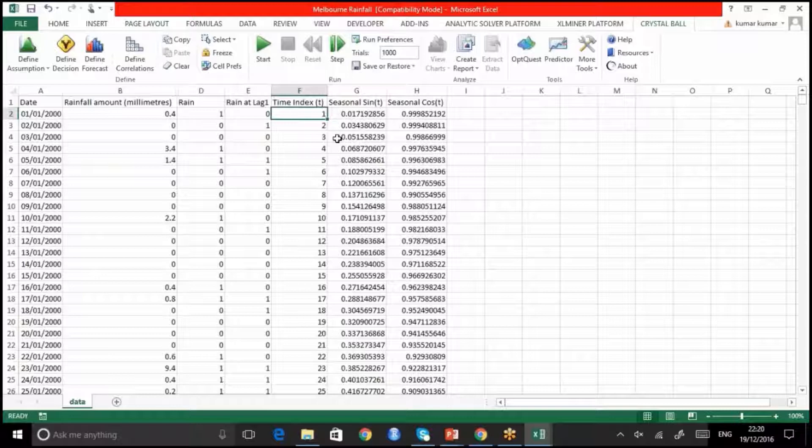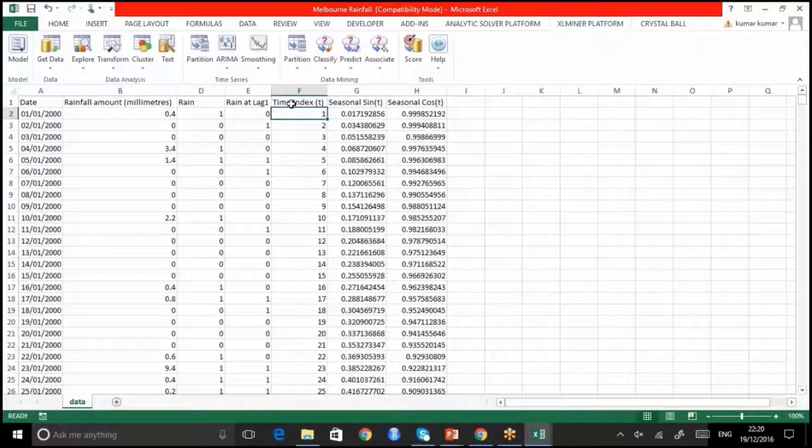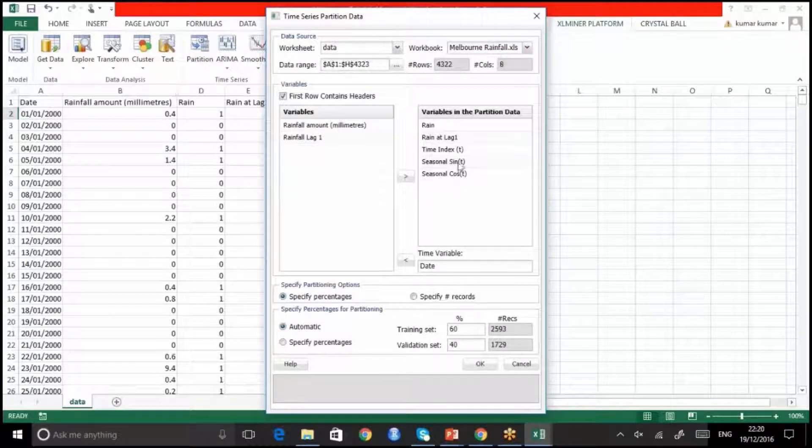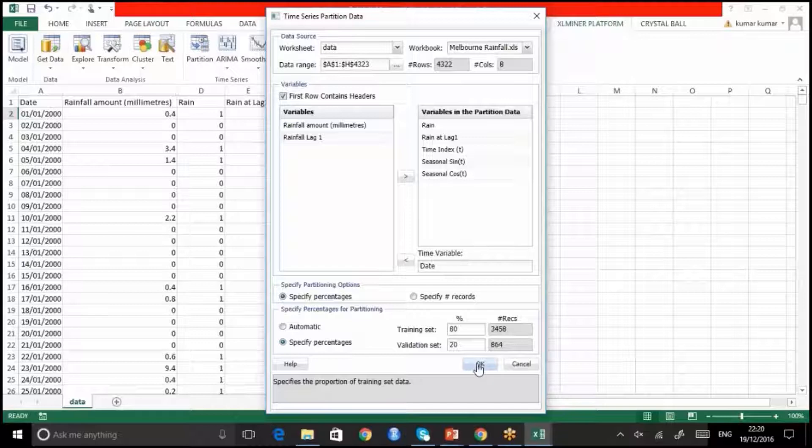I'll go to this and let me partition using time series here. We have all these values: rain, rain at lag 1, time index, these two values. I am here going to specify percentage and say I change this to 80-20. So 80% of the data I want to place it in training data and another 20% in validation data. We are splitting this data into training and validation data.